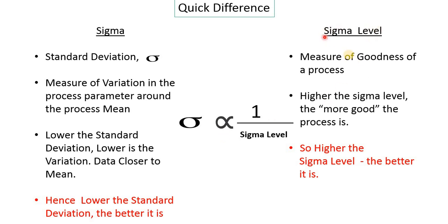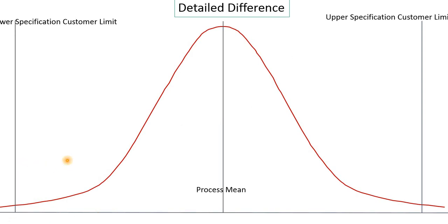Now we will see in detail the physical meaning of Sigma level. We have studied the normal distribution curve in previous videos — this is the same normal distribution curve, also called the bell-shaped curve or the Gauss curve. This line is the process mean — the average of the readings of whatever parameter you are measuring for the process.